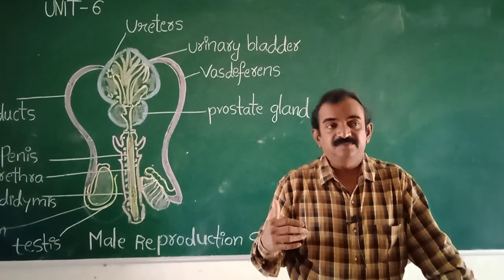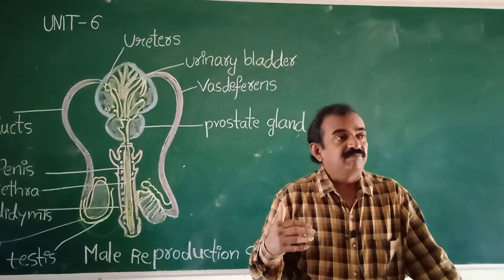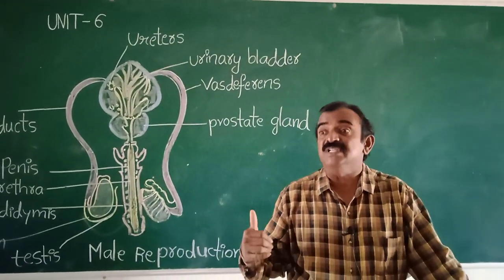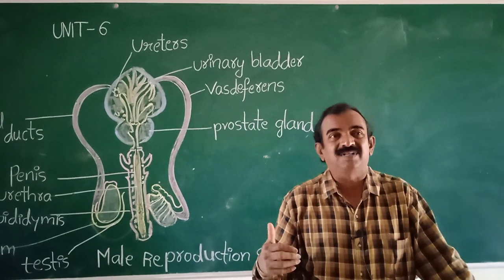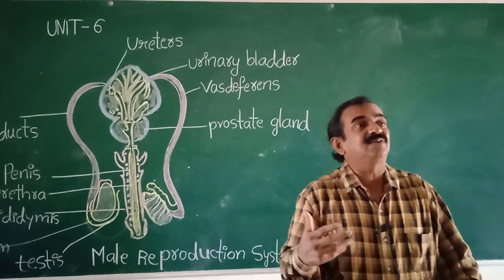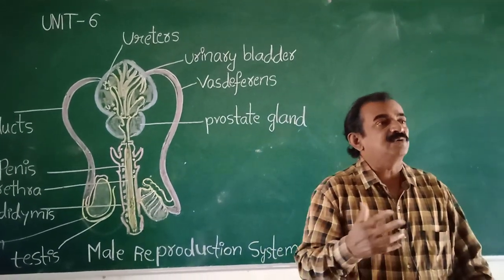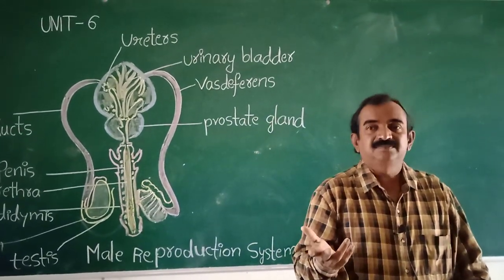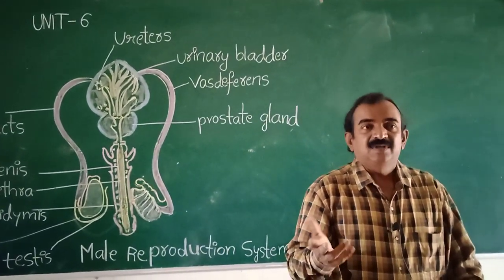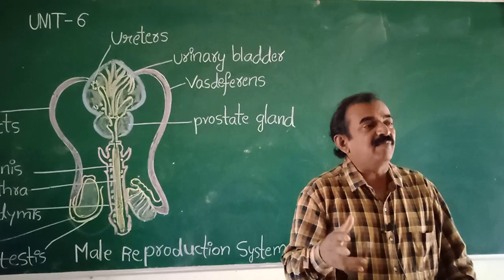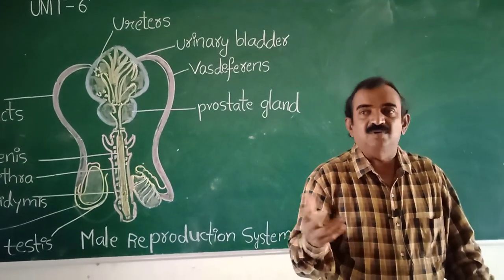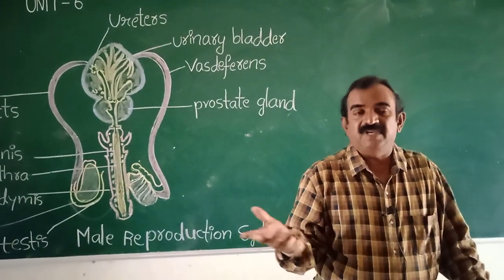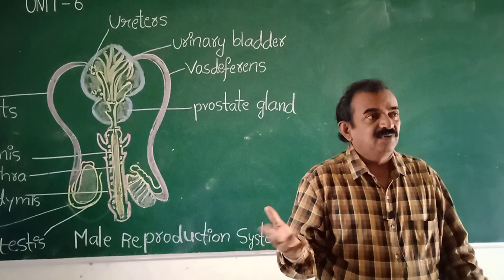Reproduction unit — page number 123. It is easy to remember: 1, 2, 3. Male reproductive system is on page 123.